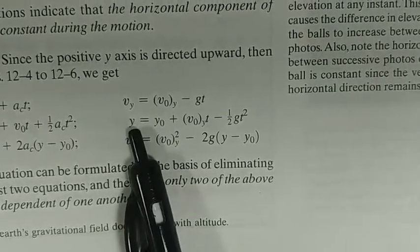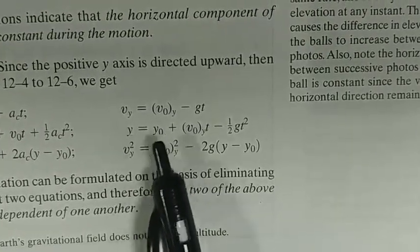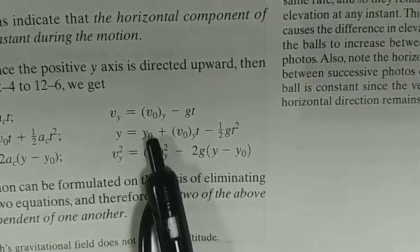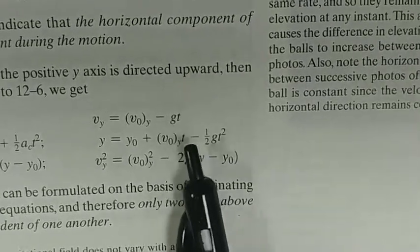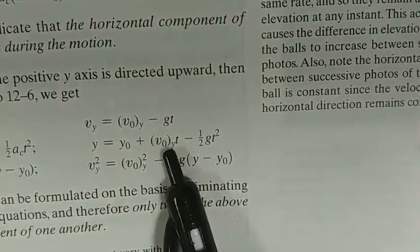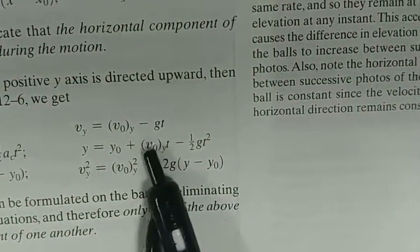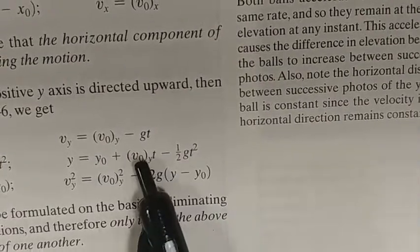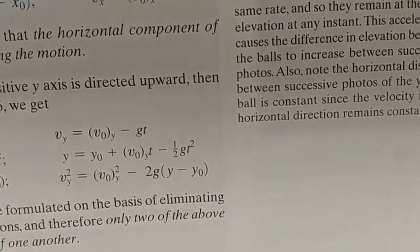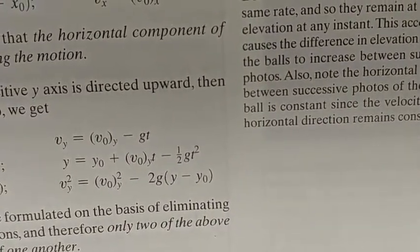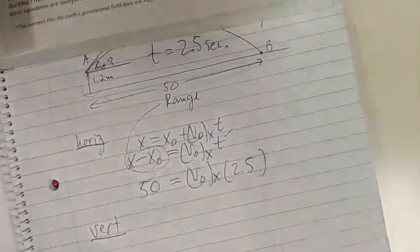Do we have the final Y position? Yes. Do we have the original initial? Yes. Do we have time? Yes. We don't have V0Y because that's what we're looking for. So we've got everything here except V0Y. So how about we use the second one? Let's put that down.